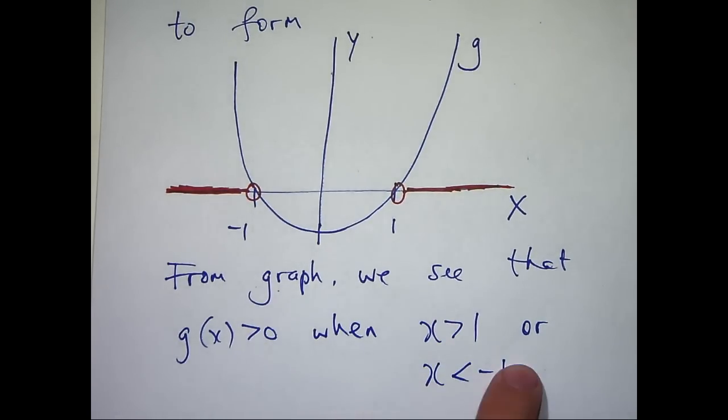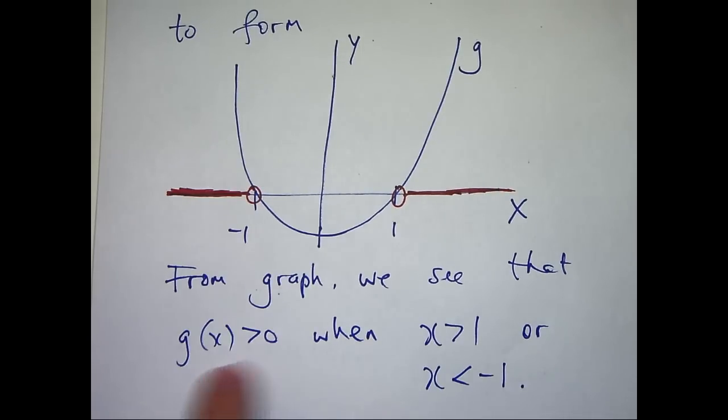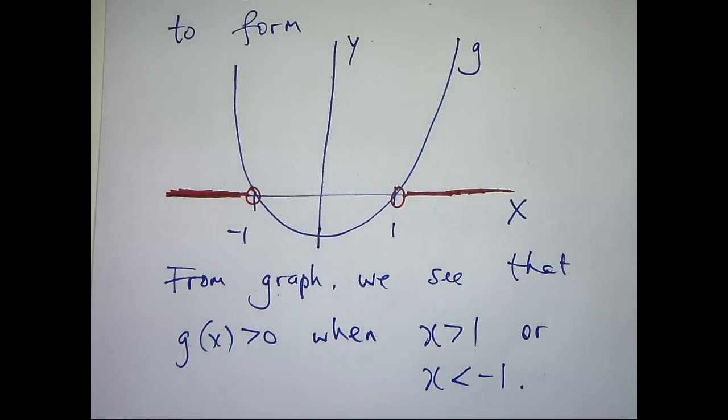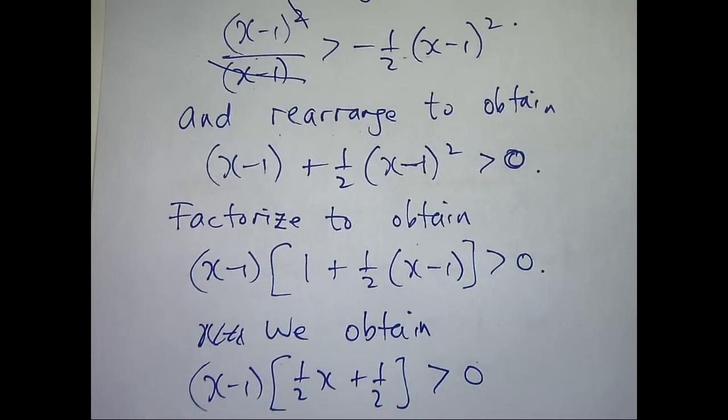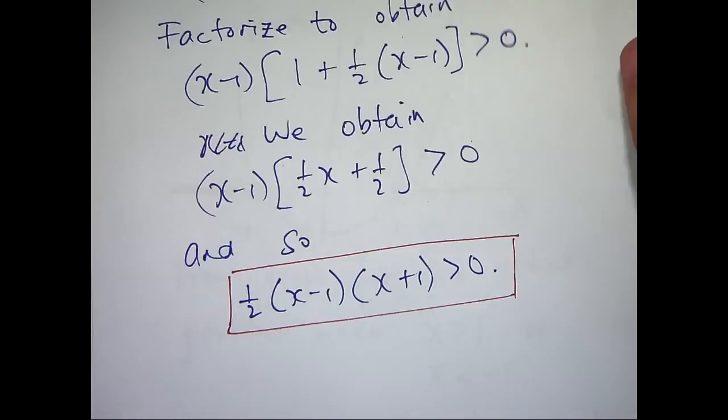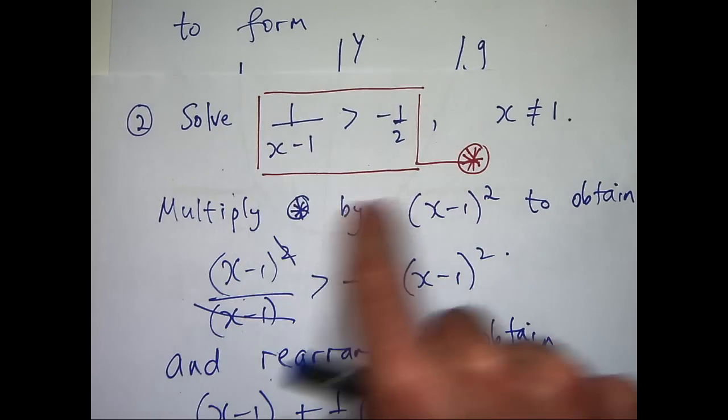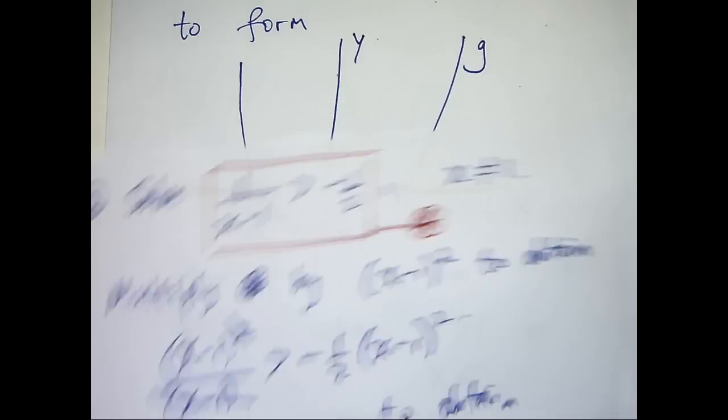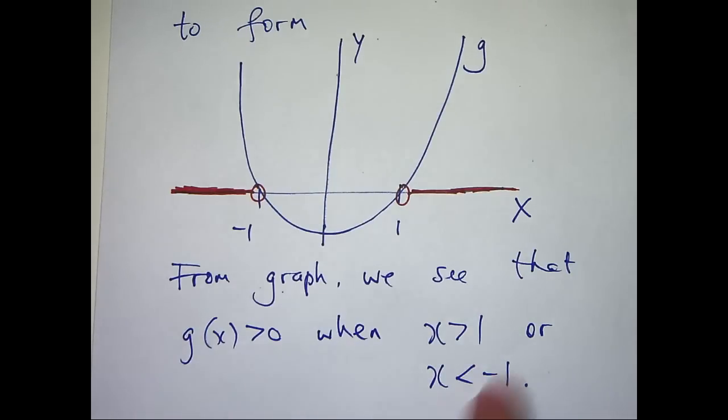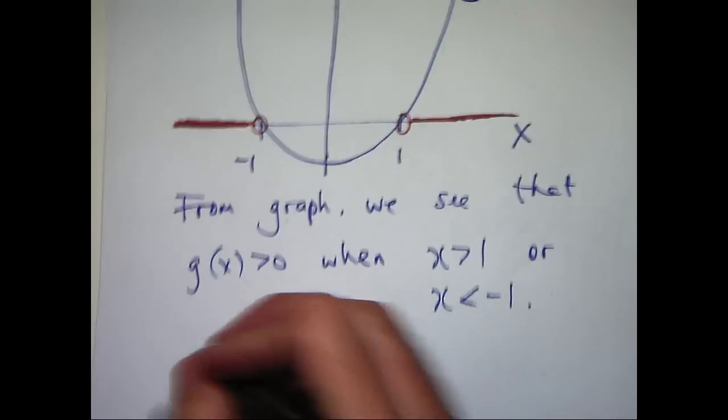So these values of x make g positive and in turn, we know that this will be satisfied and our original star inequality will be satisfied. So these are the points that we're interested in. So let's make a conclusion.